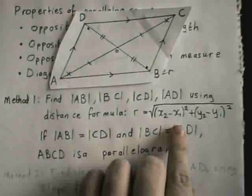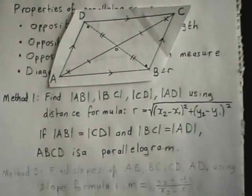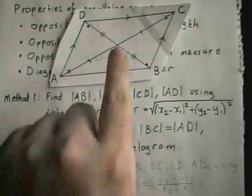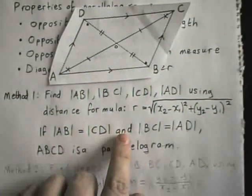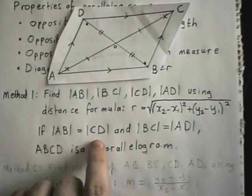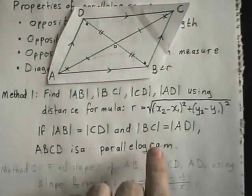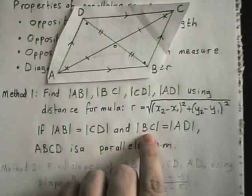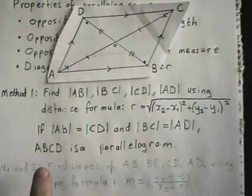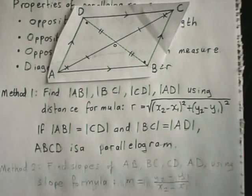Having found those lengths with the distance formula, if I can prove that length AB is equal to length CD — the opposite side — and it's very important to include the word AND here because if only one of these is true you don't necessarily have a parallelogram — so if it's also true that line BC has the same length as AD, then ABCD is a parallelogram by that first property.